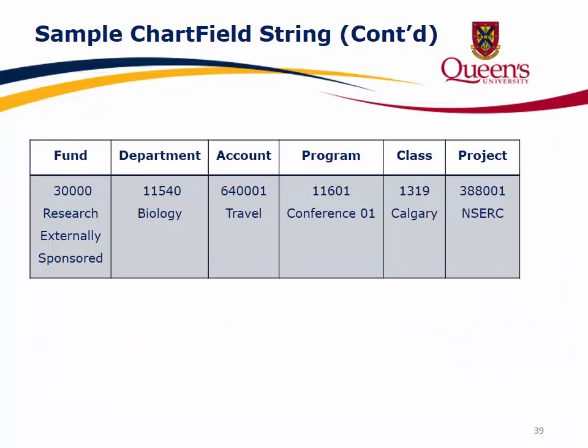Here is a typical sample chartfield string. Suppose a principal investigator in biology has an NSERC research grant and wishes to reimburse their student for conference travel that took place in Calgary. When coding the reimbursement, it might look like this: Fund 30,000 (externally sponsored research), Department 11540 (biology), Account 64001 (travel), Program 11601 (Conference 1 activity), Class 1319 (Calgary activity), and Project ID 388001 (the NSERC grant).